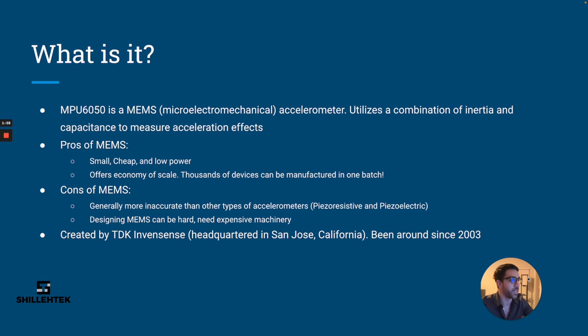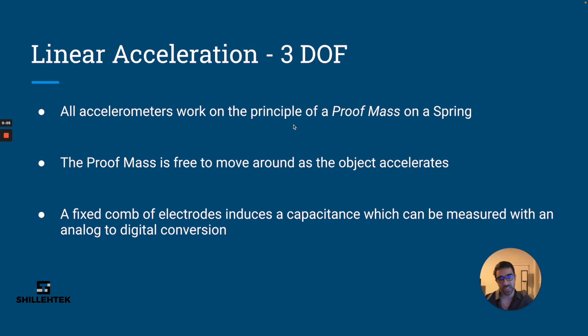The values you get from the MPU6050 are linear acceleration and angular acceleration, which makes a total of six degrees of freedom. How do we get acceleration in the first place? Well, all MEMS accelerometers work on the principle of proof mass on a spring system. This proof mass is essentially free to move around as the object accelerates.